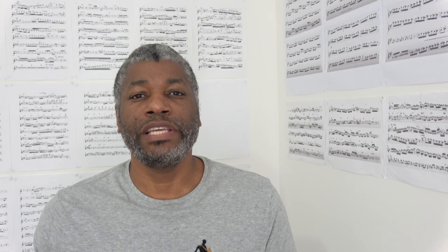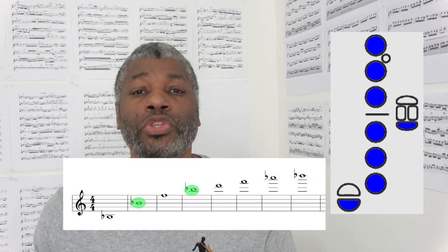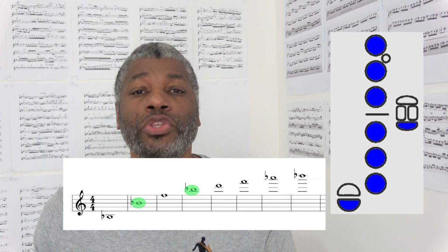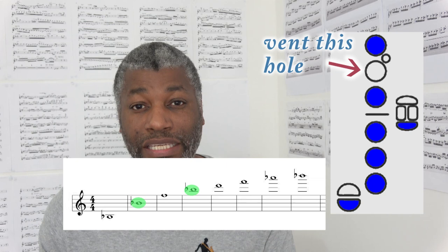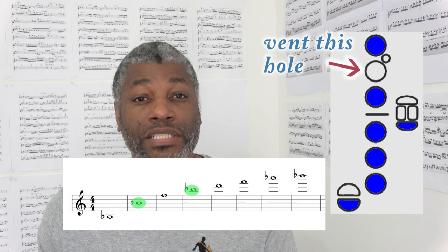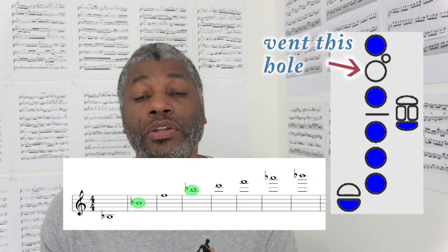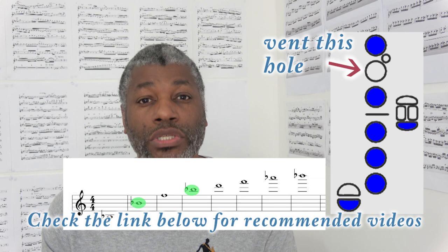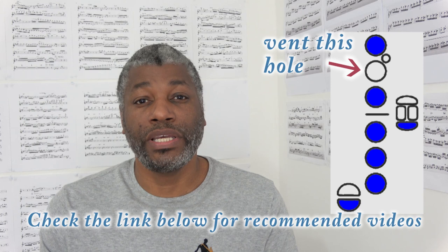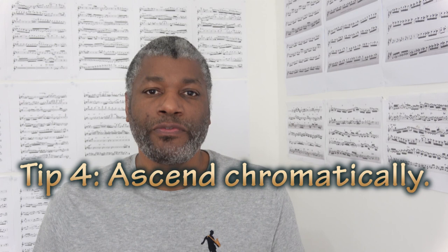Tip number three: modify the fundamental fingering. Suppose you are working on the B flat harmonic series and you want to produce either of the B flat overtones but you can't do it. What you could try is to modify the fundamental fingering by raising the second finger of your left hand to vent that key, which might actually help you produce that note. If you can produce the note by venting that key, it's then a matter of trying to sustain that note when you close that key again. Personally I've never used this technique, but if it works for you then go with it. I got this technique from Donna Schwartz, who has created various videos on overtones — I'll put a link in the description below.